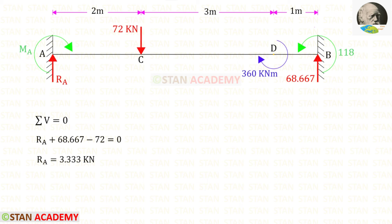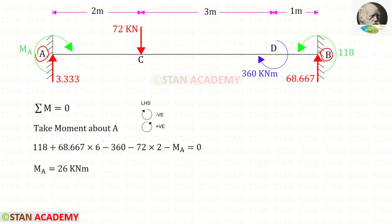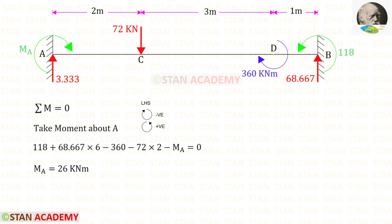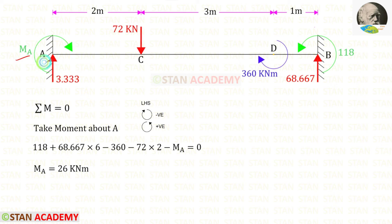By applying Sigma V equals zero we can find RA. Let us take moments about A to find MA. We assume MA is acting in the clockwise direction. MB is acting in the anti-clockwise direction, so it will be positive. RB is also positive, with a distance of 6. The moment 360 is acting in the clockwise direction, so it will be negative. The concentrated load acts clockwise, so it is also negative, with a distance of 2. Finally, for MA we get a positive value, which means the assumed direction is correct — MA is acting in the clockwise direction.